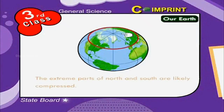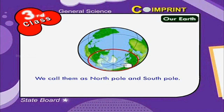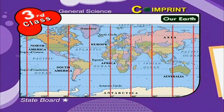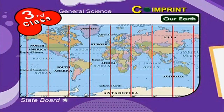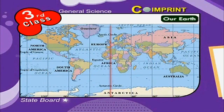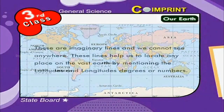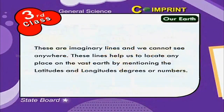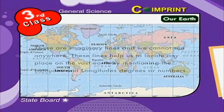The extreme parts of north and south are slightly compressed. We call them the north pole and south pole. The imaginary lines drawn vertically on the globe, joining the north and south poles, are called the longitudes. The longitude that passes through Greenwich is called the zero degree longitude. These are imaginary lines and we cannot see them anywhere. These lines help us to locate any place on the vast Earth by mentioning the latitude and longitude degrees or numbers.